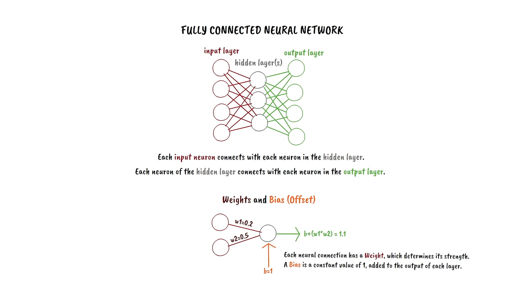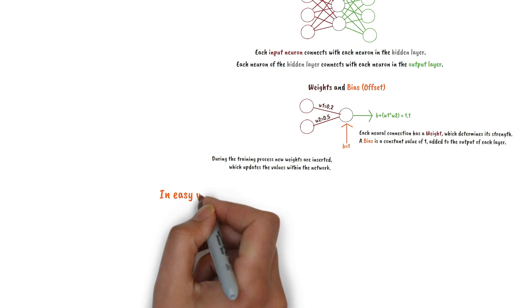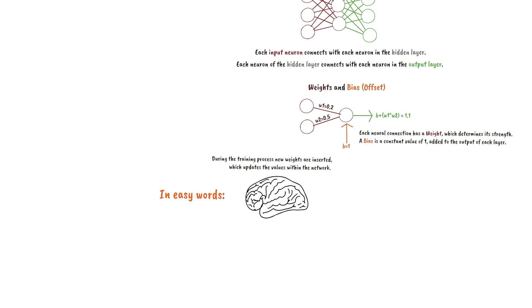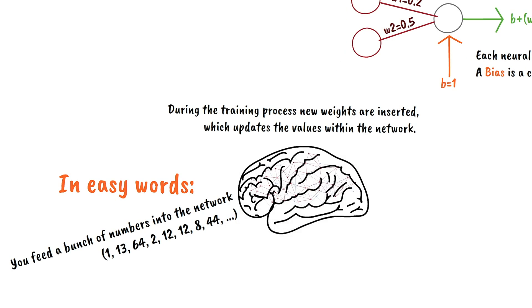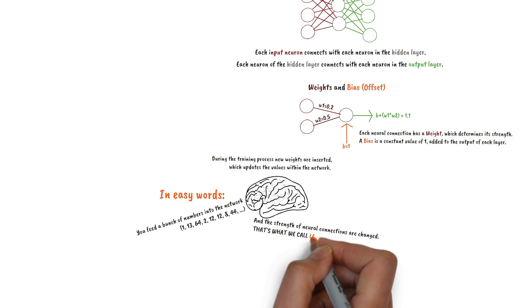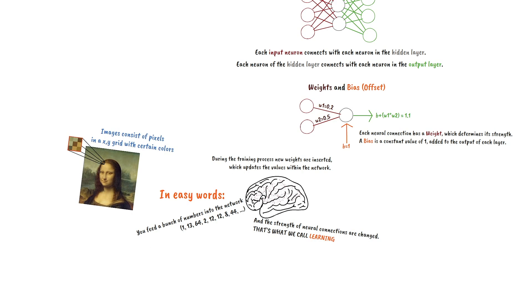During the training, new values are inserted through the input layer, which changes the weights of the neural connections in the whole network. In easy words, you insert a bunch of numbers into the network, which adapts the values of the neural connections. That's called learning.